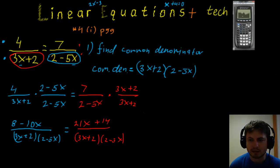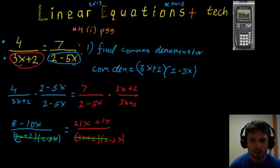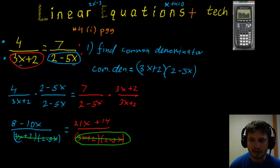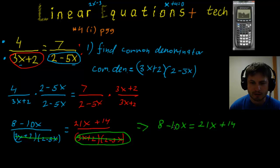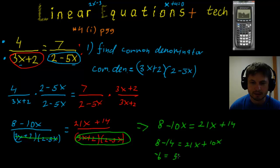Now we can ignore the denominator completely. Multiplying both sides by the common denominator cancels it out, leaving us with 8 minus 20x equals 21x plus 14. Collecting terms: 8 minus 14 equals 21x plus 20x, which gives minus 6 equals 41x.